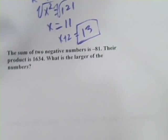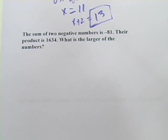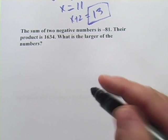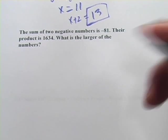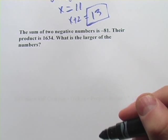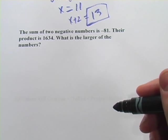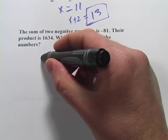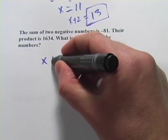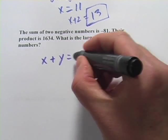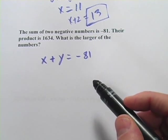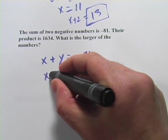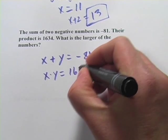Let's look at one more of these. This one says the sum of two negative numbers is negative 81. So let's call these x and y, and I'll just know they're going to be negative, so if I solve a quadratic, I'm going to be looking for those negative solutions. So x plus y equals negative 81, and their product is 1634, so x times y equals 1634.